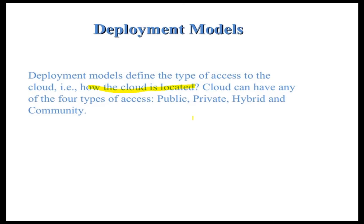The cloud can have four types of access. Public cloud means anyone can access that data. Private cloud means your individually or organizationally owned data is stored there. Hybrid cloud is a combination of public and private — some things you keep private and some things are publicly visible.